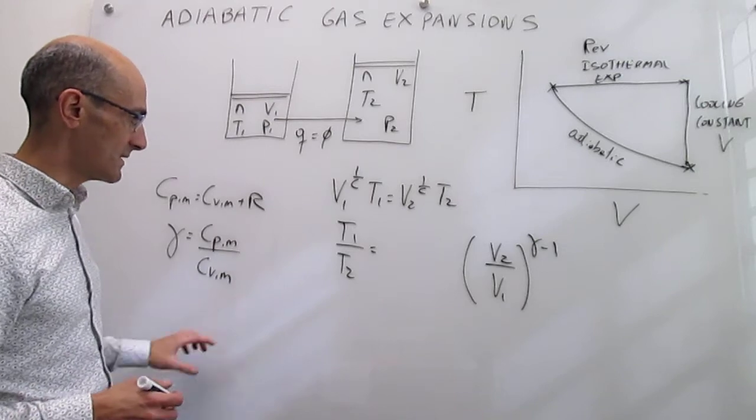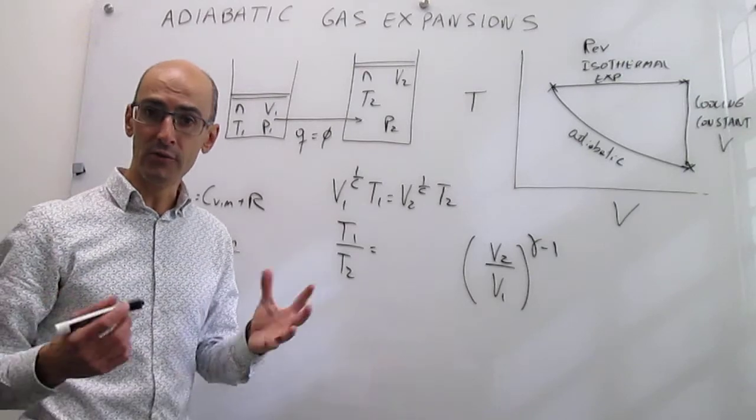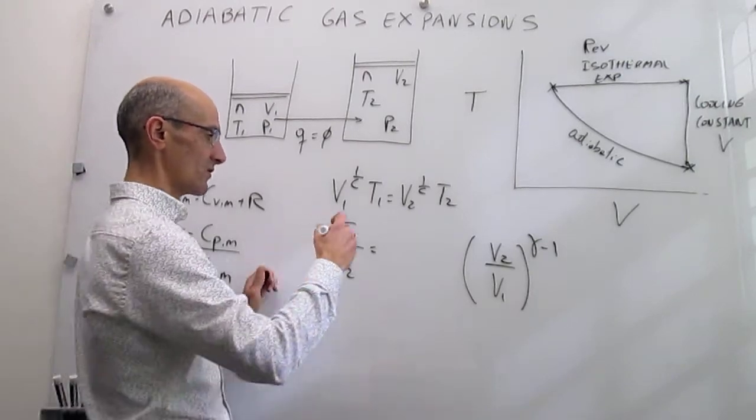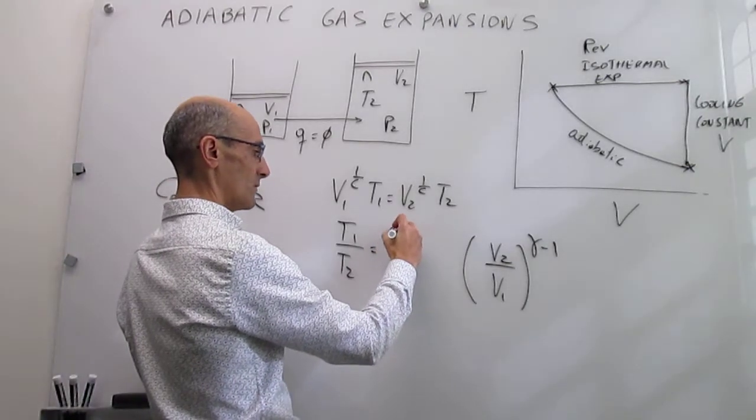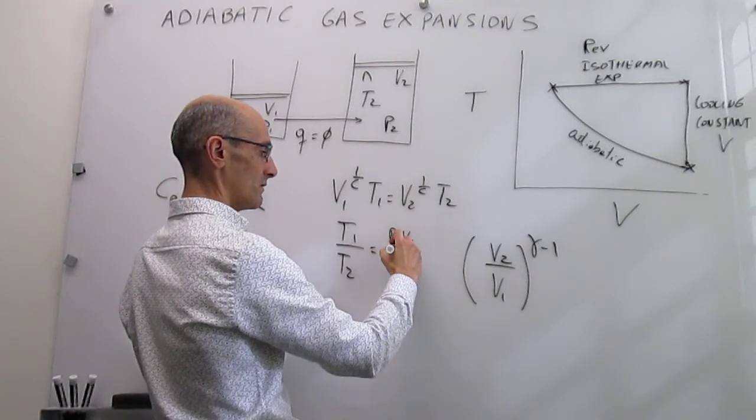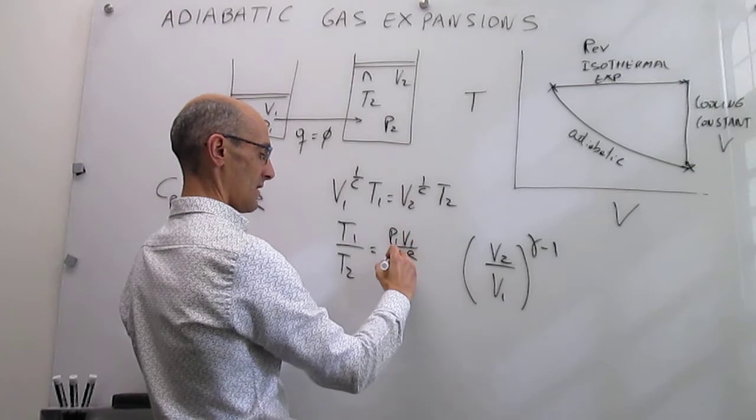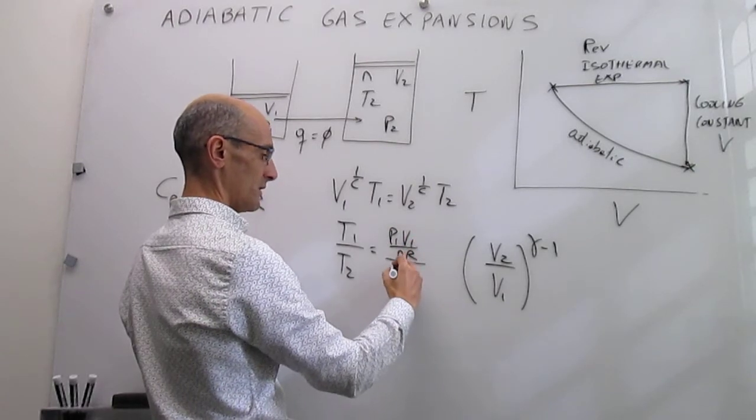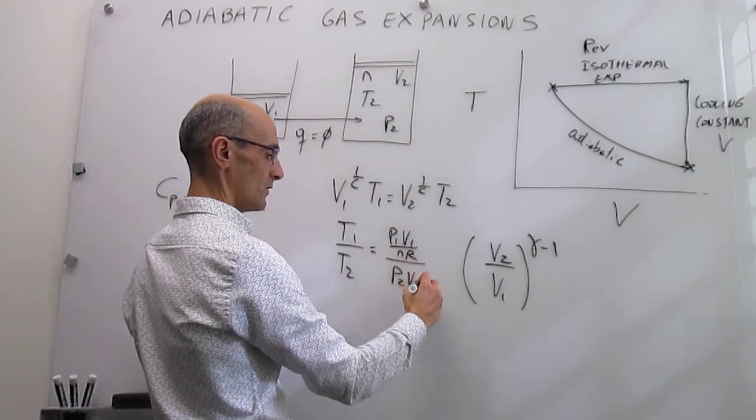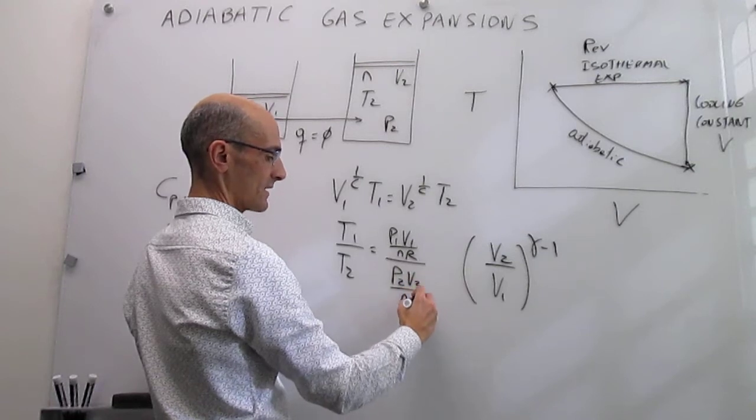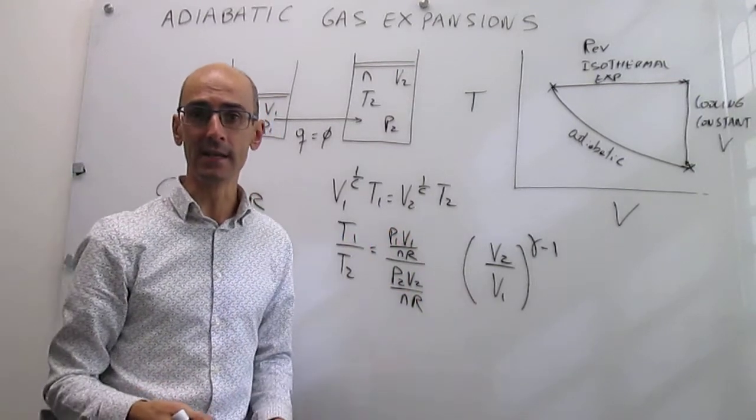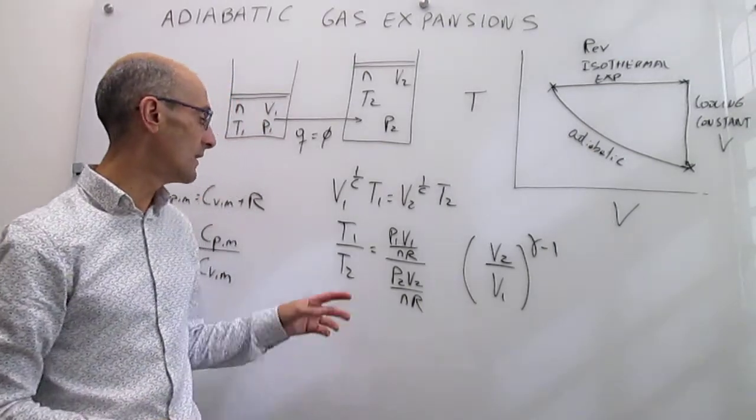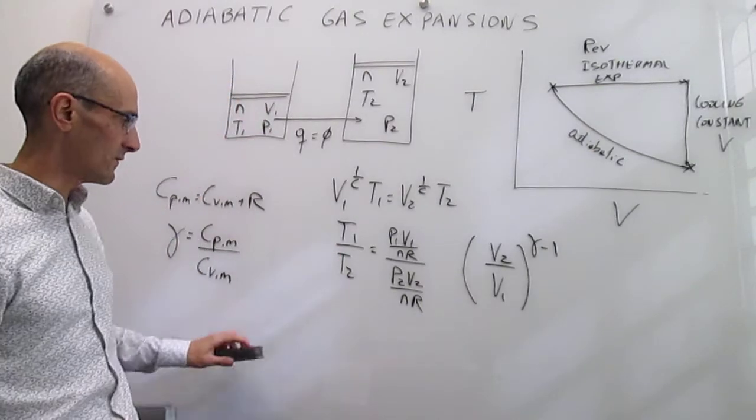We can actually replace that T1 using the ideal gas equation of state. That is going to be equal to P1 V1 over nR. And that T2 is going to be P2 V2 over nR. This just comes from applying the ideal gas equation of state to solve for those temperatures as a function of the pressure.